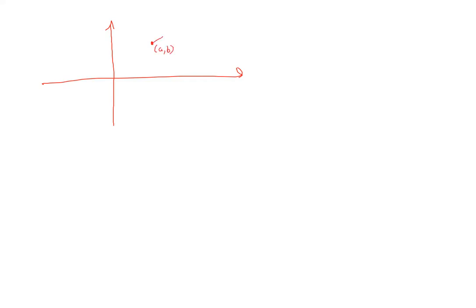and I have a line that has slope M, then we could argue that its equation is actually Y minus B equals M times X minus A. This is called the point-slope formula.